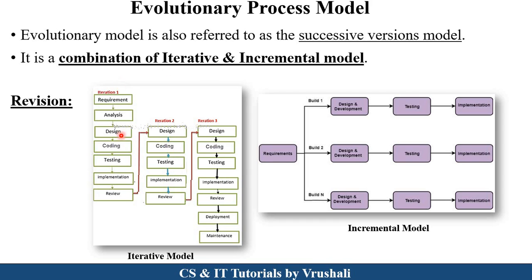What exactly is the iterative model? See here in this diagram. In the first iteration they collect the requirement from the customer. After collecting the requirement they analyze it, and after requirement analysis they design, code, and test the complete product. After completing the implementation they take a review from the customer. If the customer wants any changes, they again move to the second iteration — they design, code, and test the product again. After complete implementation they again take feedback from the customer. This continues until the customer is satisfied, and then they deploy the product. This is the concept of the iterative model — they develop a product iteration by iteration, and after completing implementation they take a review or feedback from the customer.